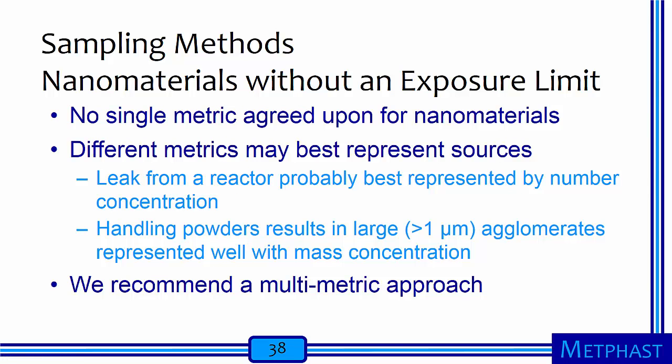A more common situation is the need to assess exposures for nanomaterials without exposure limits or other guidance documents. There is no single metric agreed upon for nanomaterials. Different metrics may best represent different sources — a leak from a synthesis reactor would probably be best represented by number concentration to avoid confusion from larger background particles, whereas handling powders results in large agglomerates greater than 1 micrometer that are well represented with mass concentration. For this reason, we recommend a multi-metric approach like that shown in concentration mapping and task-based monitoring.